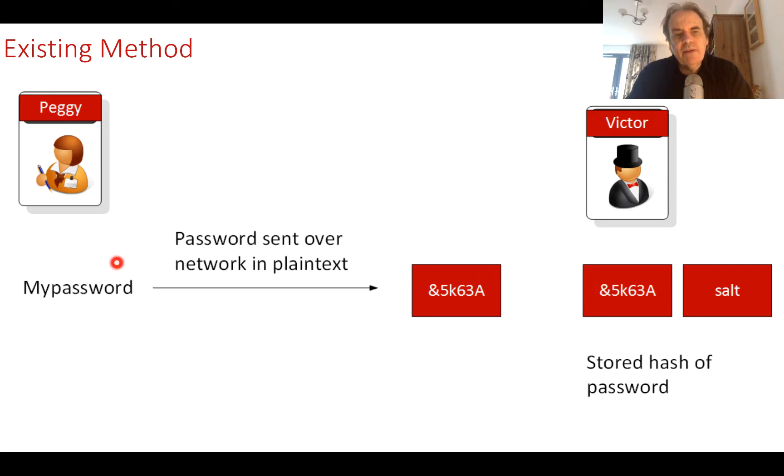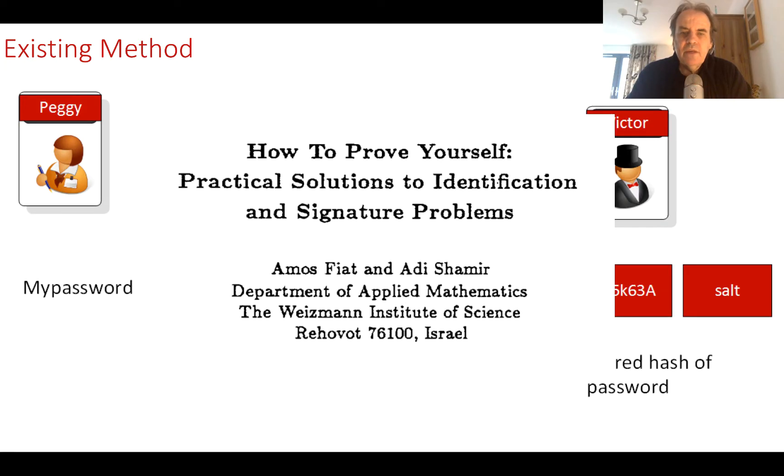We need to move away from a method where we give away all our information - our data, birth, passwords, user IDs, addresses, bank codes, pin numbers, and so on - and move much more towards a world where we know something and we prove to Victor that we know it.